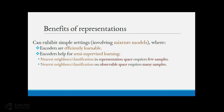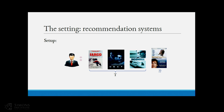I want to show that encoders can be efficiently learned, both in terms of sample complexity and runtime, and moreover they are useful for semi-supervised learning. The setting is recommendation systems. You get to see a bunch of users and a subset of the movies they like — not a numerical rating, just whether they like a subset of movies. The task could be: for some user, given a particular movie, does the user like it or not?